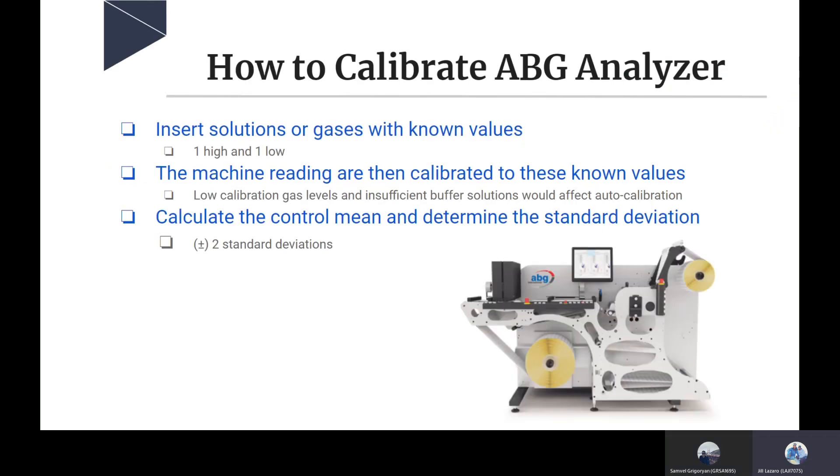Now we're going into how to calibrate an ABG analyzer. Calibration is specific to each different manufacturer and brand, so they'll have specific instructions. But in general, they work along the same kind of values. When we're calibrating the analyzer, we're doing it to make sure it's functioning correctly. How this works is that we insert a gas or solution with known values - one will be high and one will be low. The machine then reads and calibrates these known values. We can have some issues such as gas levels or insufficient buffer solutions that would affect calibration.